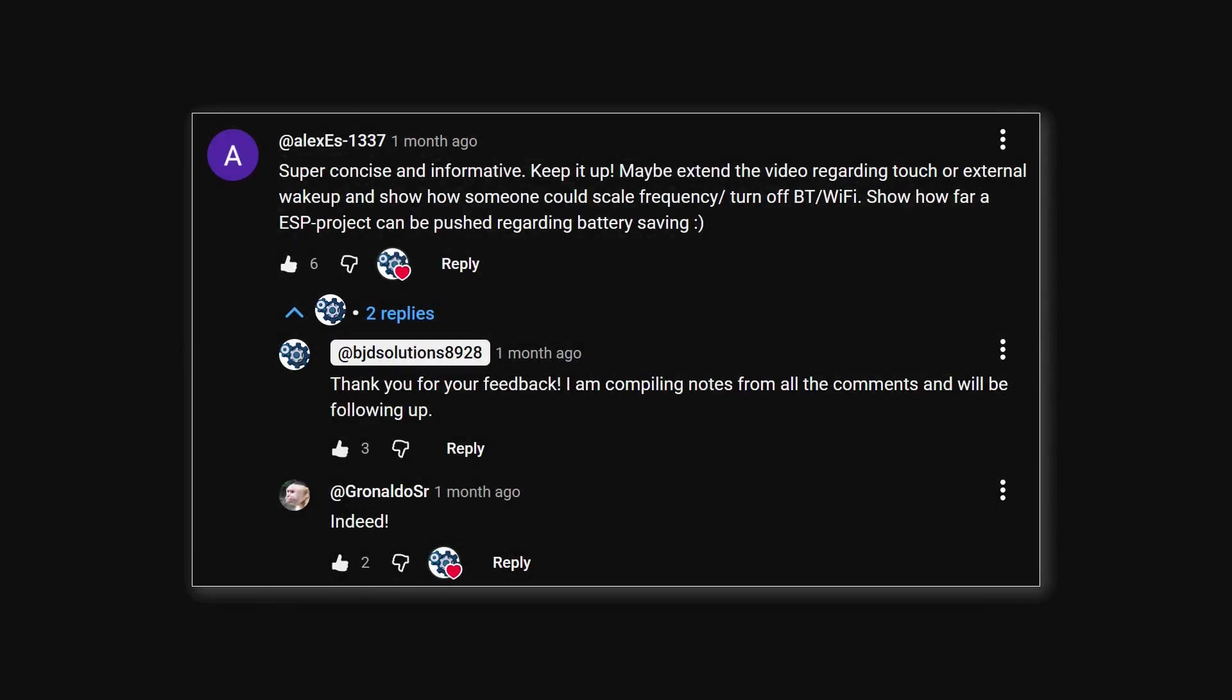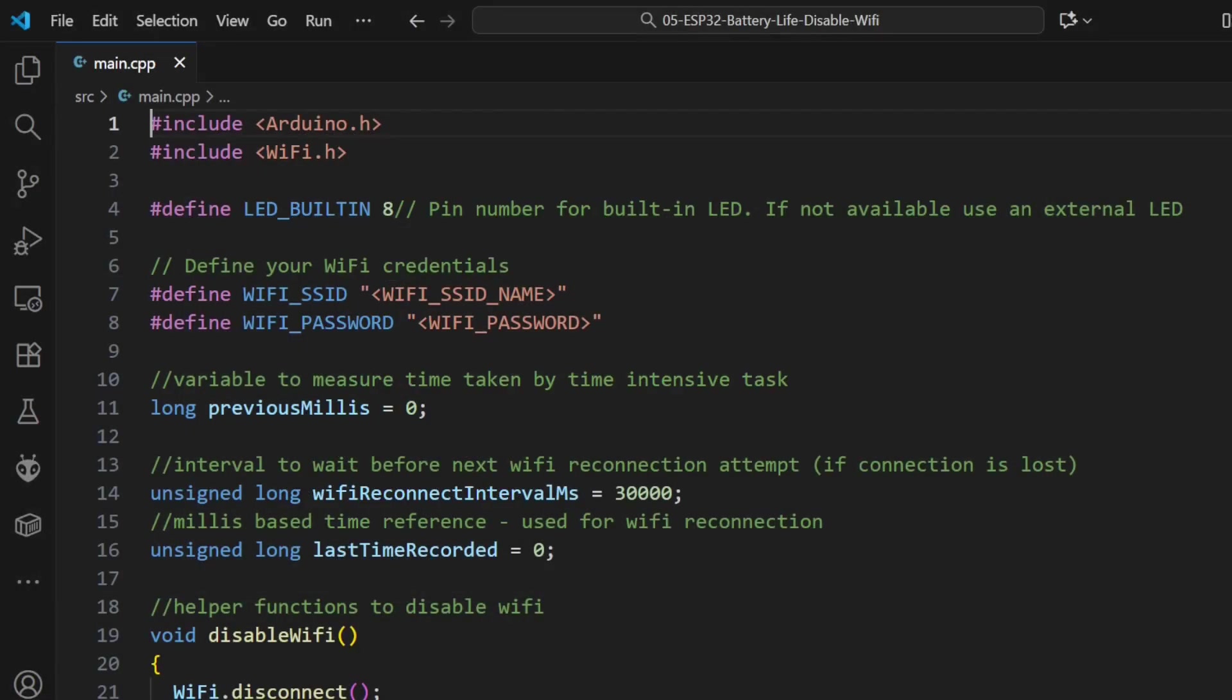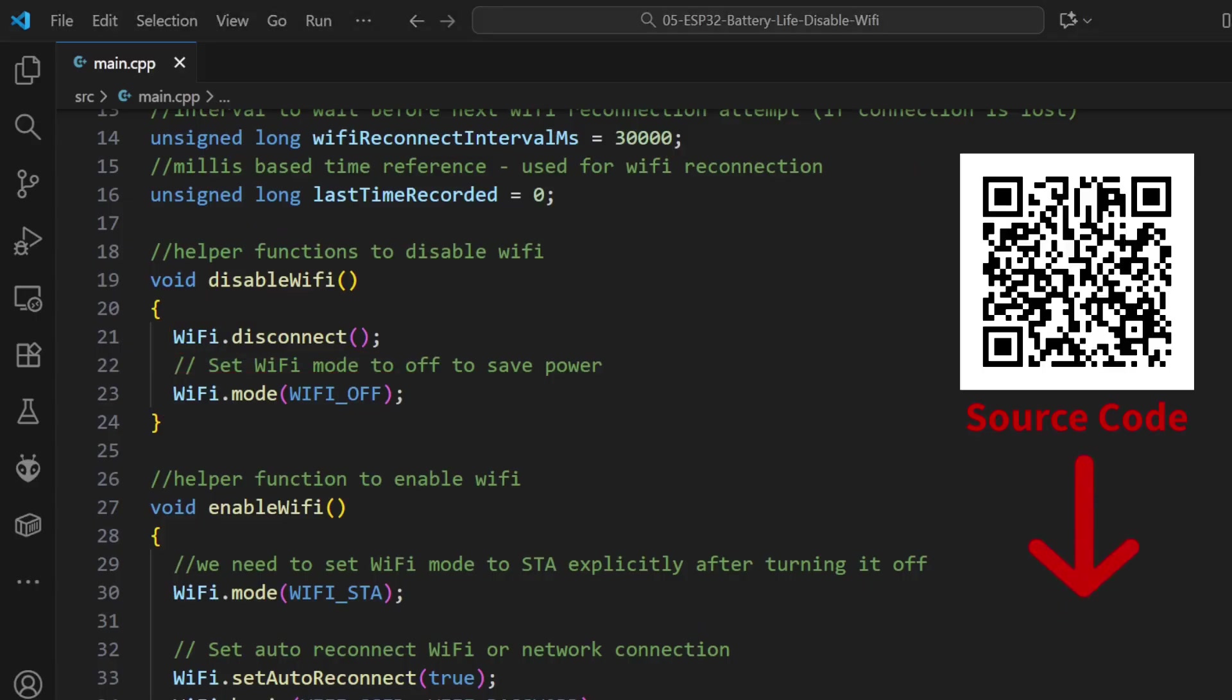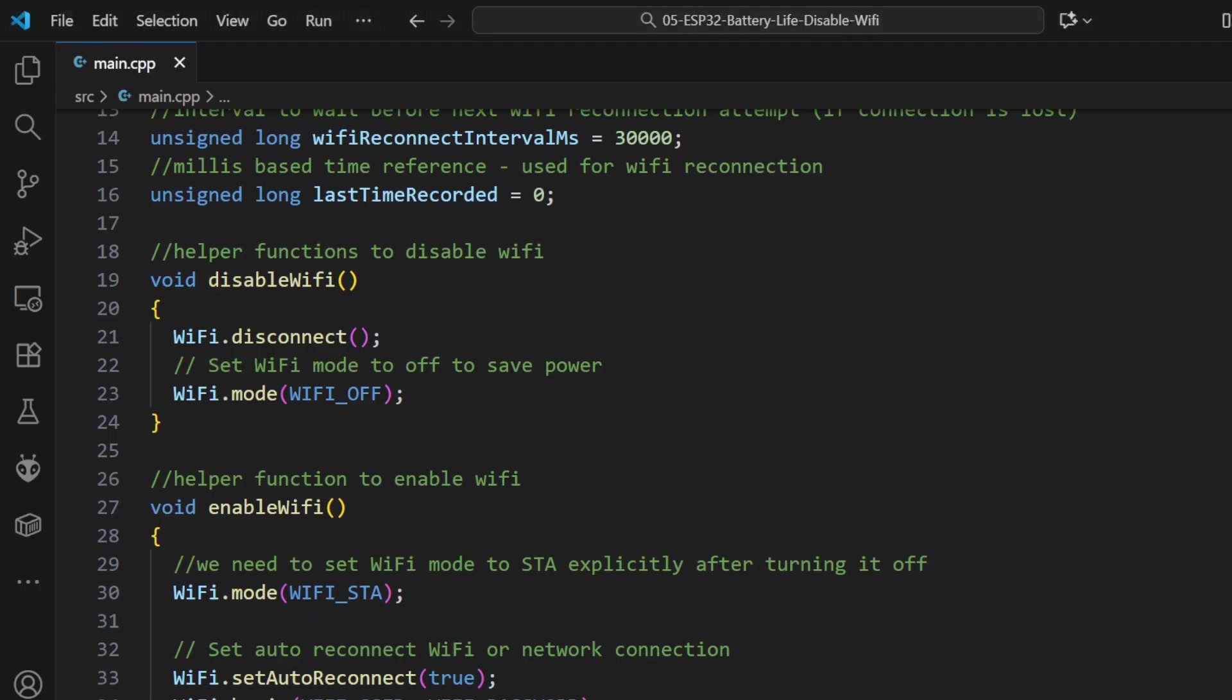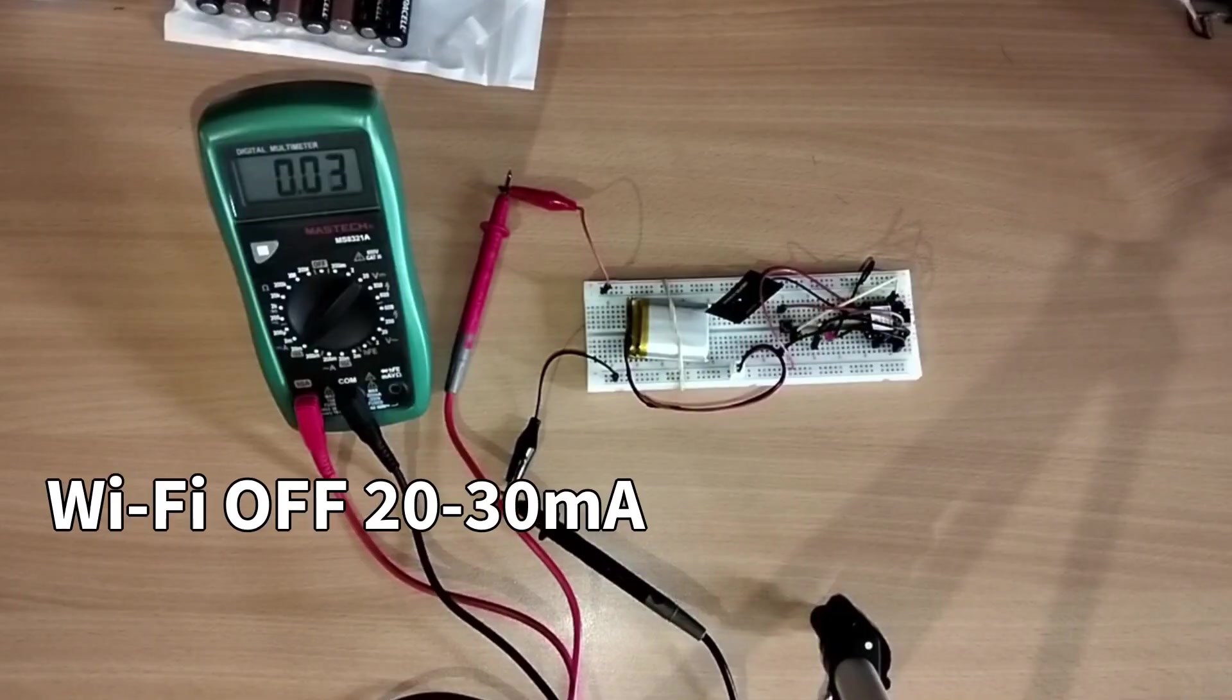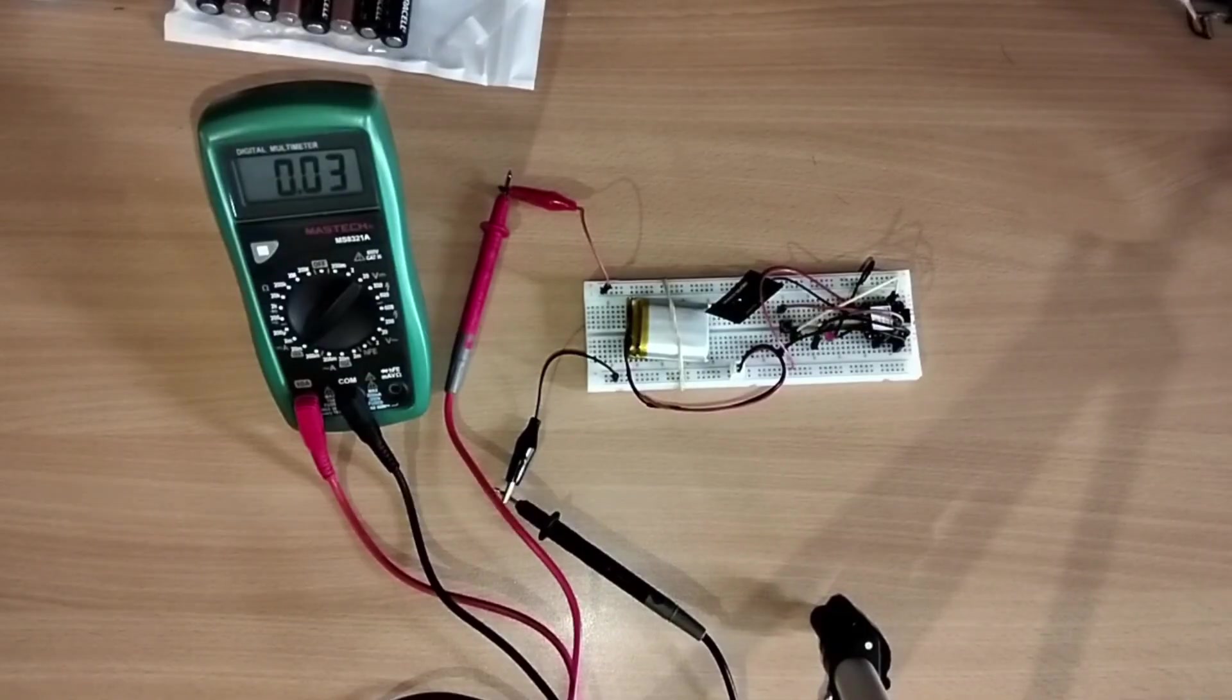Now for the big one. The single most power hungry part of your ESP32 is the radio. Wi-Fi and Bluetooth are absolute battery killers. If your project only needs to connect once in a while you must turn them off when they're not in use. Thankfully it's super simple. After you're done connecting you just disconnect and then set the Wi-Fi mode to Wi-Fi off. The drop is instant and significant. This is one of the easiest and most effective power saving tricks in the book. And don't forget if you use the deep sleep mode from our original video it automatically turns off the radios for you.